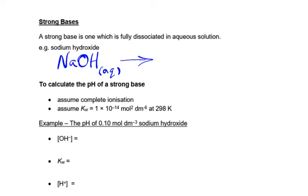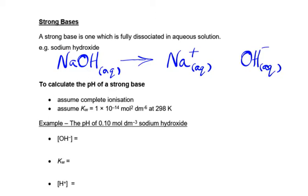With a solution of sodium hydroxide, we just have lots of sodium ions and hydroxide ions. Like a strong acid, these fully dissociate. So for every mole of sodium hydroxide, we have a mole of sodium ions and, more interestingly, a mole of hydroxide ions. These are the things that we'll be doing our calculations with.